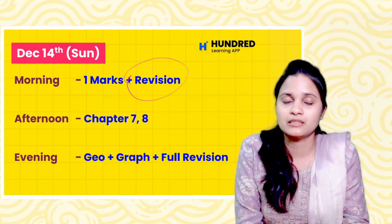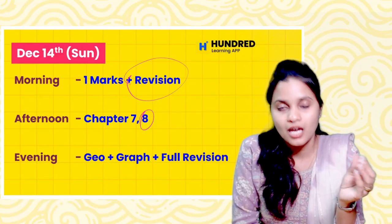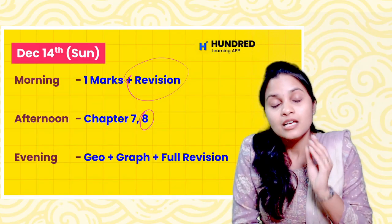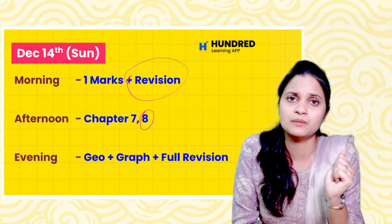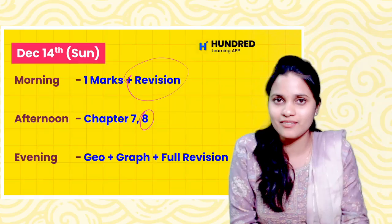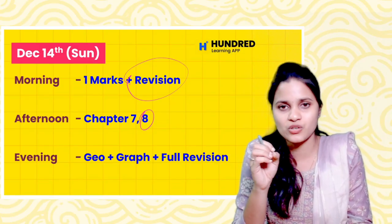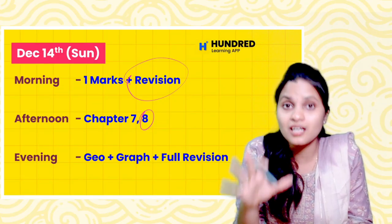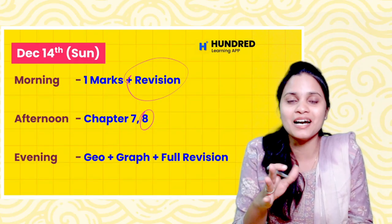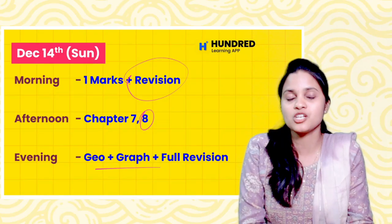One marks is the final part — chapters 7 and 8. Chapter 8 covers statistics. Please focus on probability. There are many calculations: mean, variance, and standard deviation — study at least one mark from each. In the afternoon, chapter 7 — geometry and graphs — full revision. If you are following this plan, you can score maximum marks.